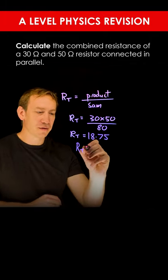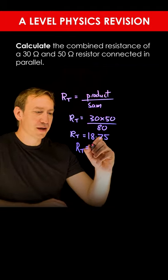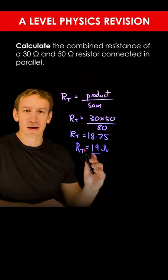So in this case, using product over sum when we've got two resistors in parallel, this gives us a combined resistance equal to 19 ohms.